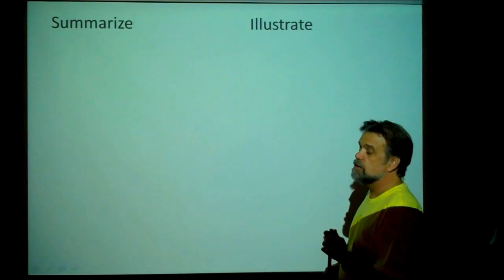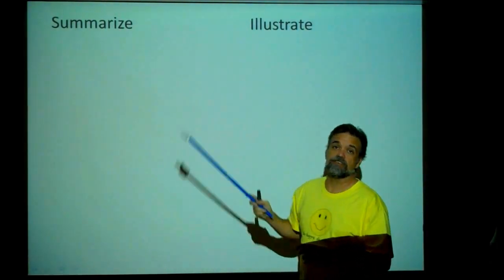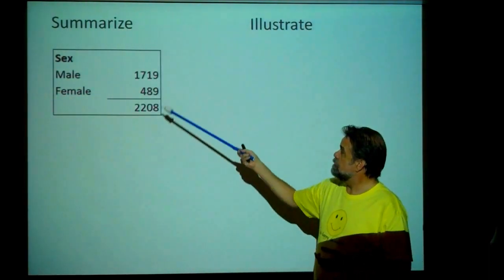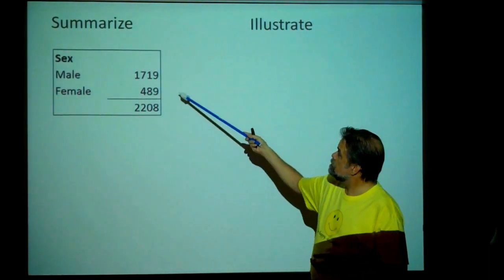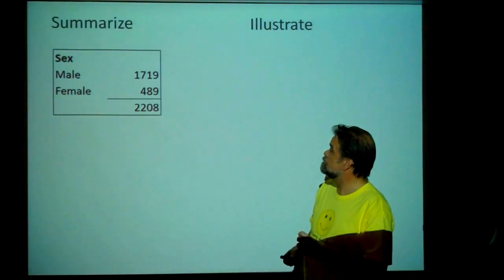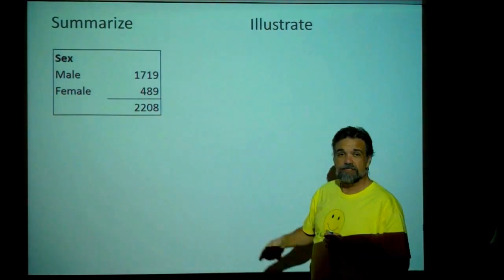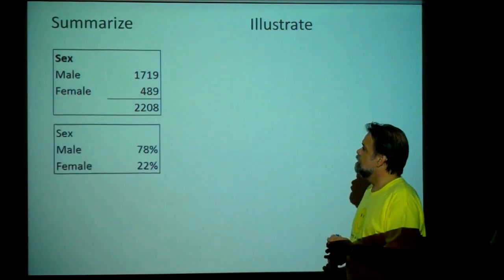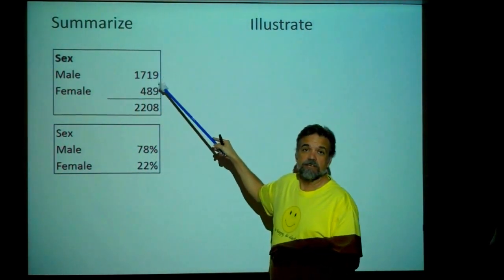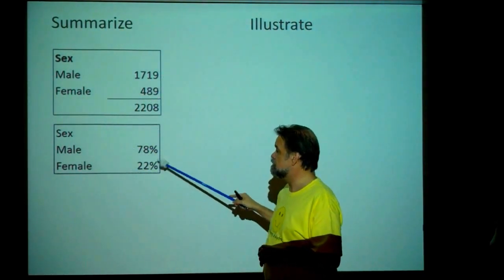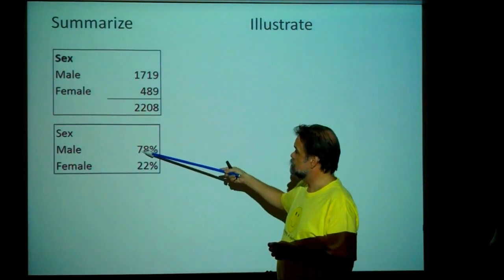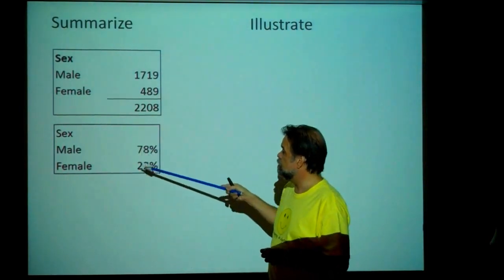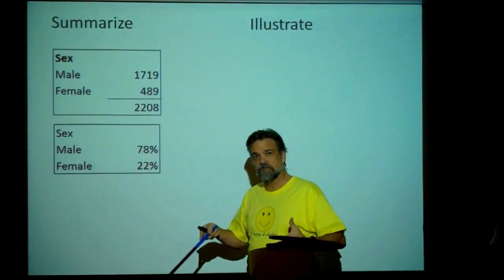So what do we do? We summarize and we illustrate. For example: how many men were on board, how many women? Out of 2,208 people, 1,719 were male. This is a frequency table. And this is a relative frequency table — 78% were male relative to the total, and 22% were female.